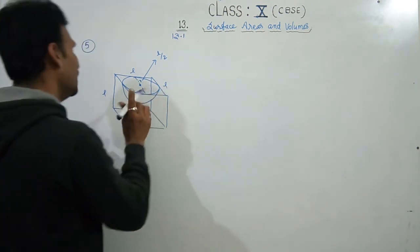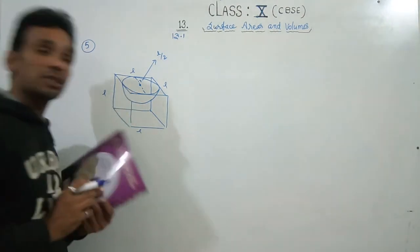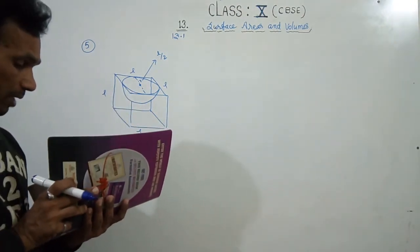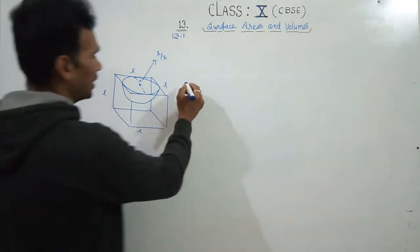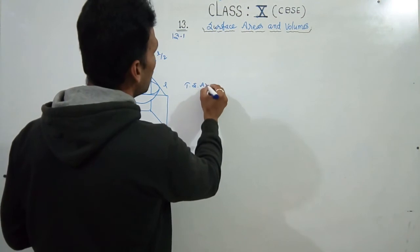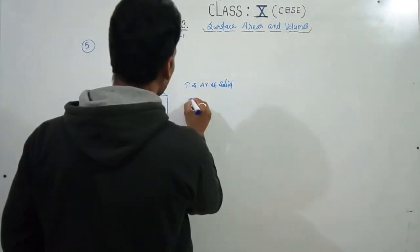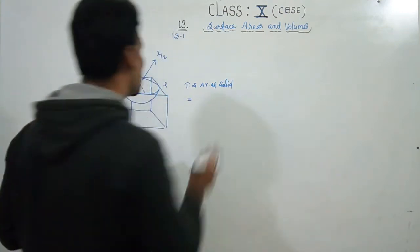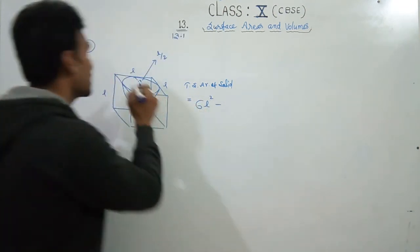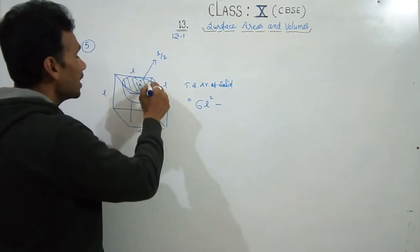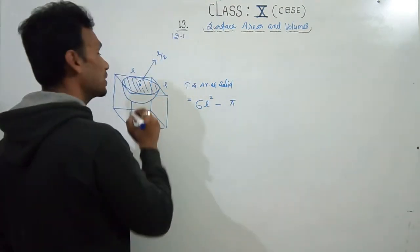What do we have to find? If we look at it from the top, we need to find the total surface area. Determine the surface area of the remaining solid. So we know already, I'll directly write: Total Surface Area of solid equals...